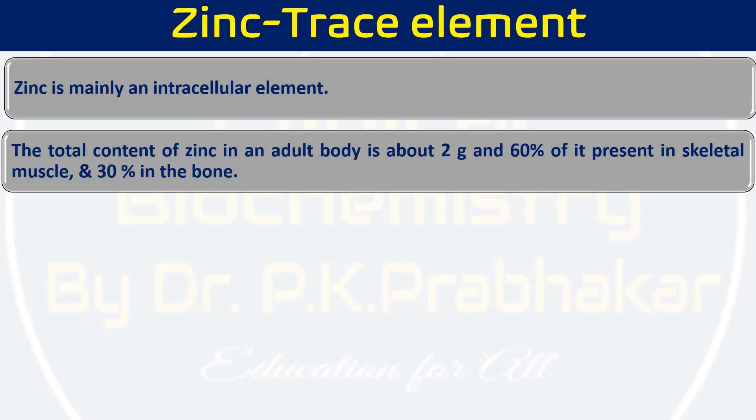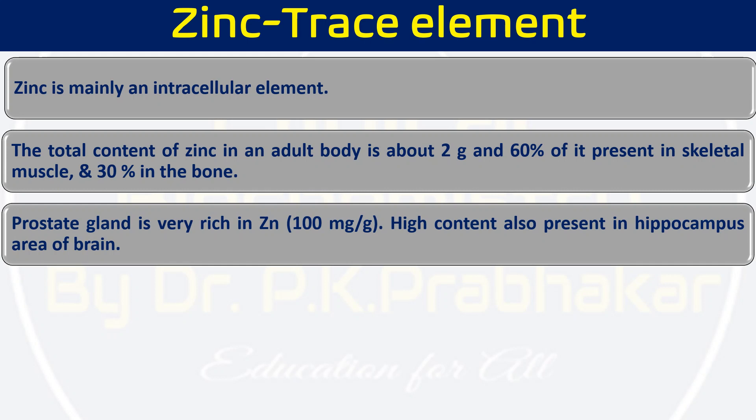The total content of zinc in an adult human body is roughly 2 grams. Out of this 2 grams, more than 60% is present in the skeletal muscles, and 30% is present in bone. So these are the two major reservoirs of zinc in our body. The prostate gland is also a very rich source of zinc — roughly 100 mg per gram of prostate. Zinc is also present in the hippocampus area of our brain.